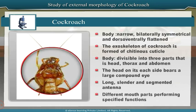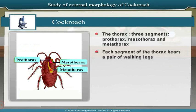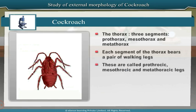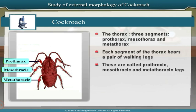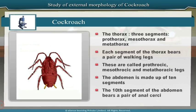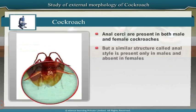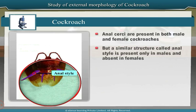The thorax comprises three segments: prothorax, mesothorax and metathorax. Each segment of the thorax bears a pair of walking legs, called prothoracic, mesothoracic and metathoracic legs. The abdomen is made up of 10 segments. The 10th segment bears a pair of anal cerci, present in both male and female cockroaches. A similar structure called anal style is present only in males and absent in females, thus showing sexual dimorphism in cockroaches.